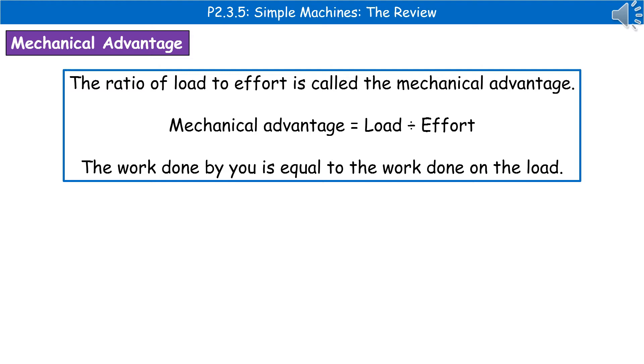And the reason that we're going to use some of these simple machines that involve things like levers is because we can get a mechanical advantage. And the ratio of load to effort is this mechanical advantage. So we'd work it out by doing the load divided by the effort. And what we find is the work done by you is equal to the work done on the load.